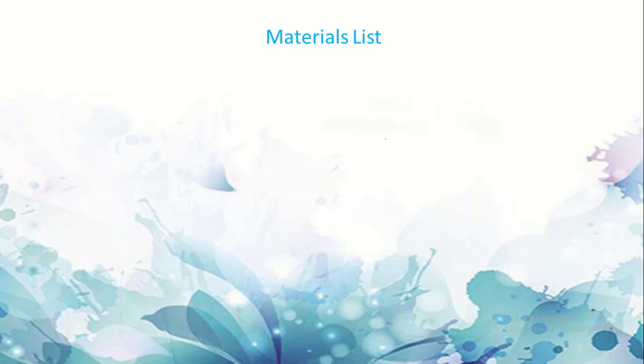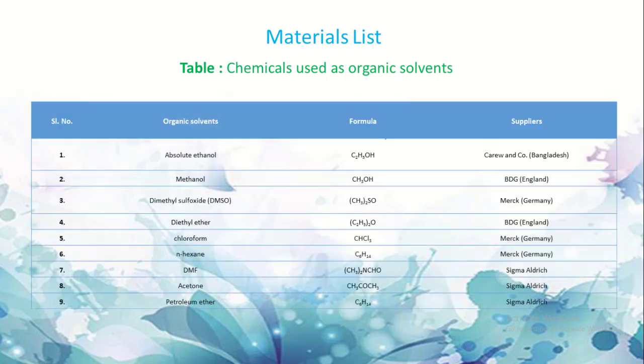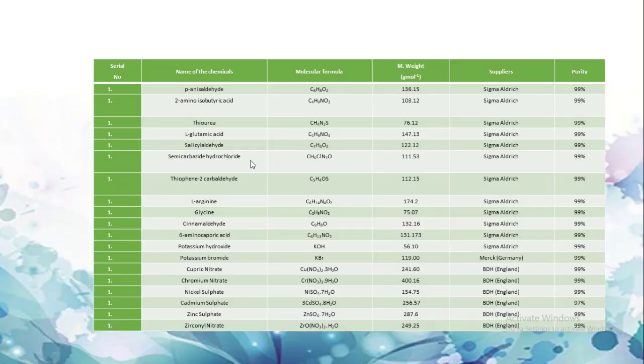Materials I have used during my synthesis of Schiff base. Table of chemicals used as organic solvents: absolute alcohol, methanol, dimethyl sulfoxide, diethyl ether, chloroform, hexane, DMF, acetone, petroleum ether. Name of chemicals include p-anisaldehyde, 2-amino isobutyric acid, thiourea, L-glutamic acid, salicylaldehyde, semicarbazide hydrochloride, thiophene-2-carboxaldehyde, L-arginine, glycine, cinnamaldehyde, 6-aminohexanoic acid, potassium hydroxide, potassium bromide, cupric nitrate, chromium nitrate, nickel sulfate, cadmium sulfate, zinc sulfate, and zirconium nitrate. Their molecular formula, molecular weight, suppliers, and purity are mentioned.